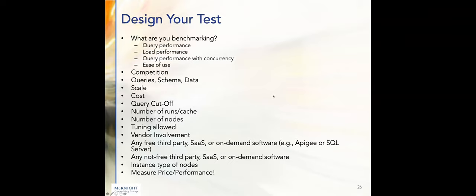I've given you a lot of information today. I hope it helps you take a harder look at what you've got to make sure it's right. I alluded to the fact that you should be benchmarking before you make selections. So what are you benchmarking? Query performance, load performance, query performance with concurrency, and ease of use. When you run a workload — maybe a TPC workload or one that represents what you're going to do — these are some of the things you can get out of that benchmark. You obviously have to load the data, you obviously are running queries, and you probably should include concurrency.